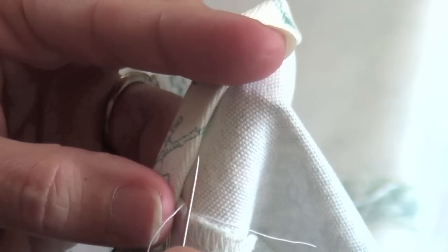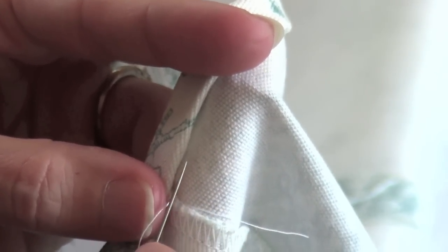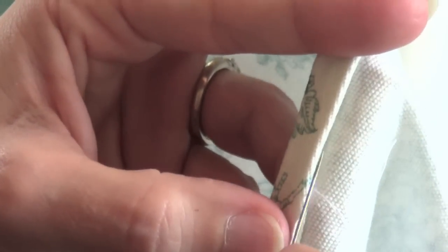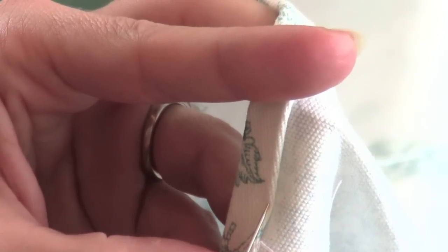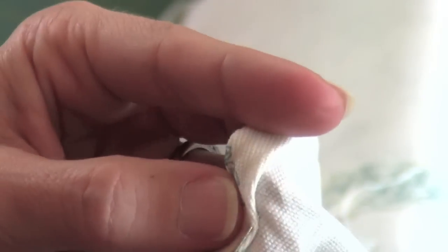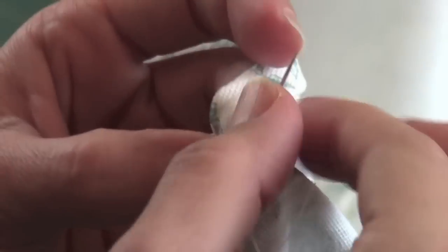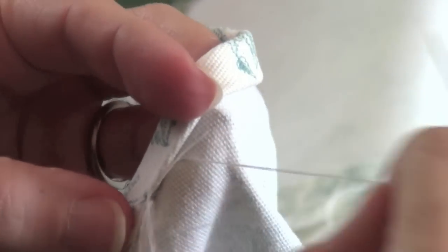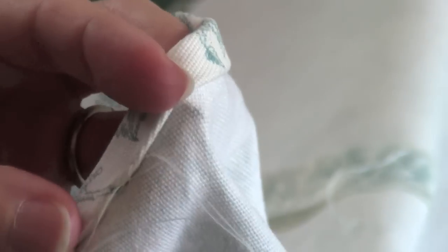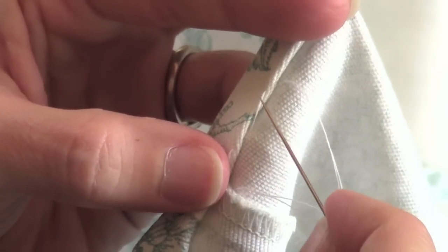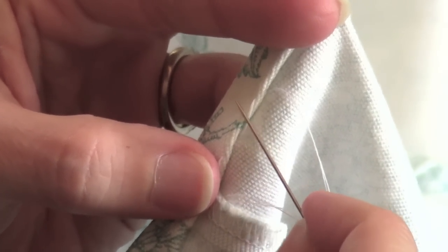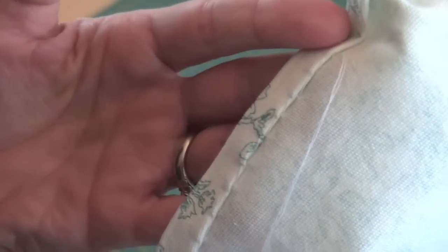We're also using matching thread that will help hide it, and we're going to continue to do that over and over again. What we want to do is pull tight enough to hold everything in place but not so tight that we create a pucker of any kind in the fabric.